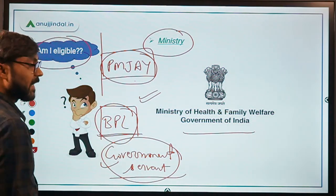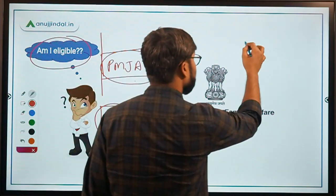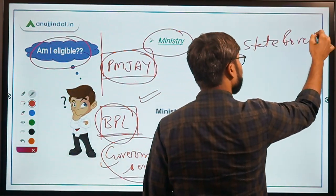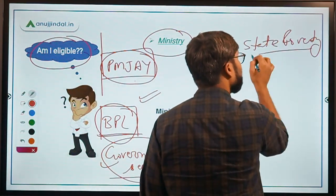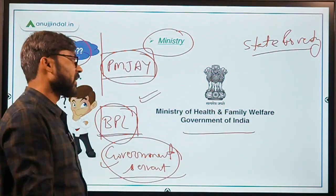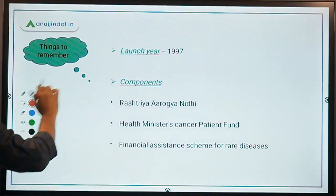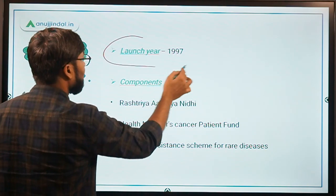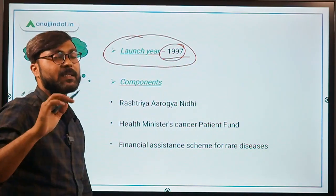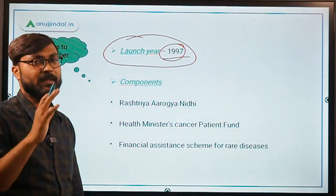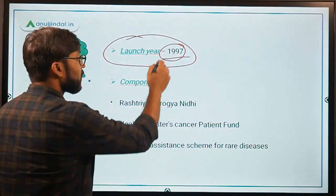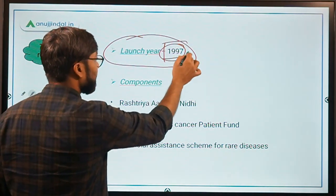All BPL families are eligible, and the poverty line here is the state-wise poverty line, not the national poverty line or central government's poverty line. This scheme was launched in the year 1997, so it is a very old scheme.